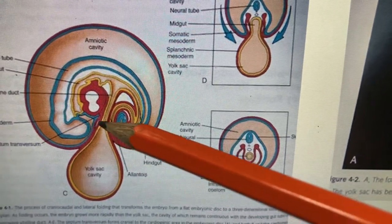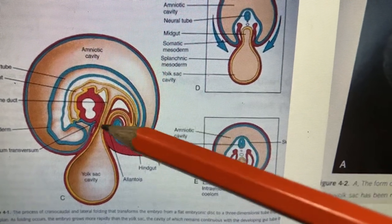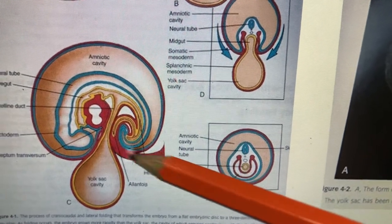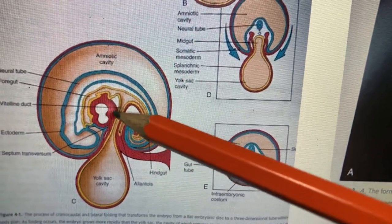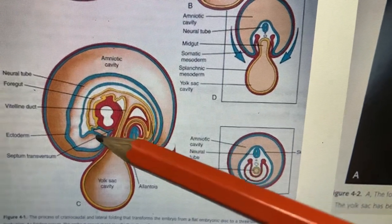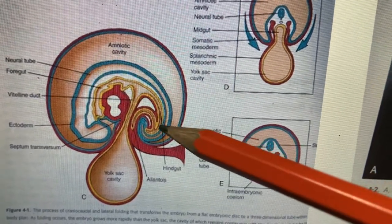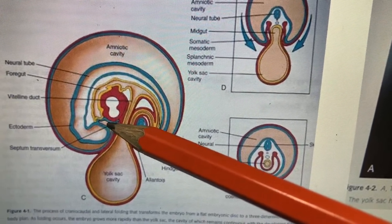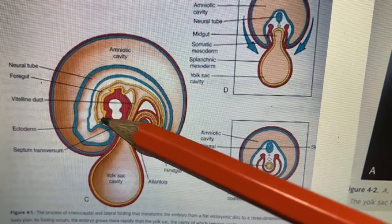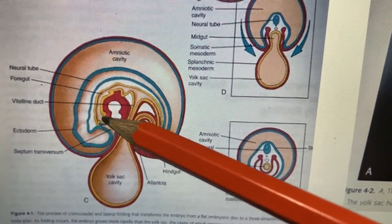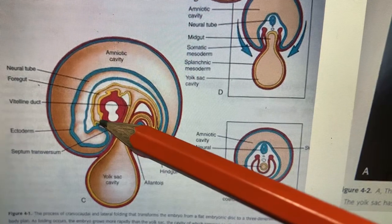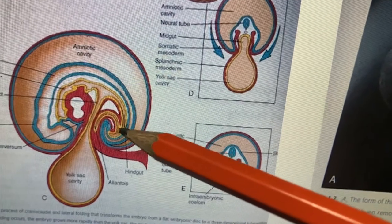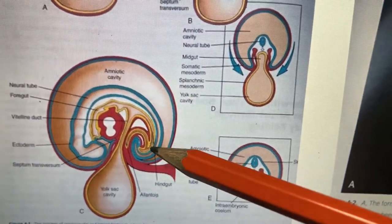The endoderm differentiates into foregut, midgut, and the posterior hindgut. The allantois is here. Because of narrowing, the connecting stalk comes toward this side along with the allantois and the vitelline duct. This entire ring-like structure is called the umbilical cord. In the umbilical cord you can see the vitelline tract, the allantois, and the umbilical blood vessels. The oropharyngeal membrane and the cloacal membrane: the oropharyngeal membrane communicates with the oral cavity when it ruptures at the fourth week of intrauterine life; likewise the cloacal membrane ruptures at the seventh week.